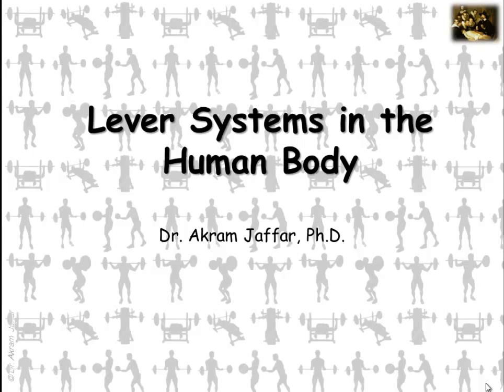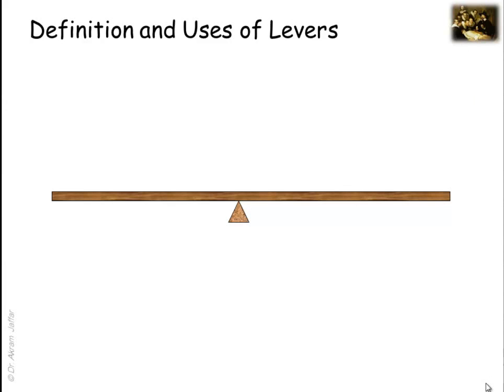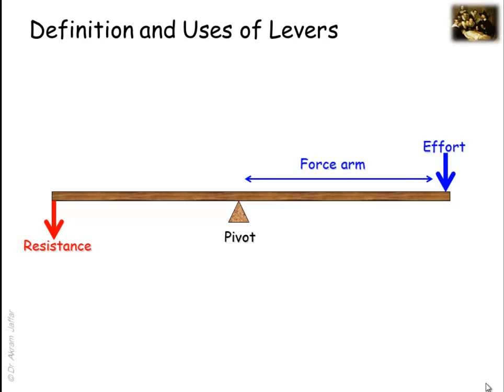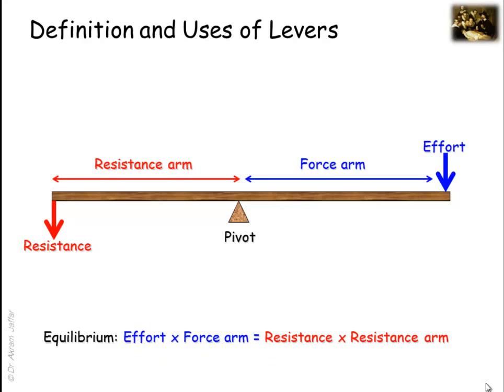Lever systems and the human body. A lever is one of the simplest machines known. Basically it consists of two forces: an effort force and a resisting force acting around a pivot or a fulcrum. The distance from the effort force to the fulcrum is the force arm, and the distance from the resisting force to the fulcrum is the resistance arm. At equilibrium, the product of the force times the force arm is equal to the product of resistance times the resistance arm.